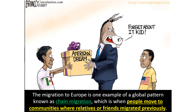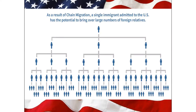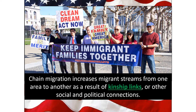The migration to Europe is one example of a global pattern known as chain migration, which is when people move to communities where relatives or friends have migrated previously. As a result of chain migration, a single immigrant admitted to the US has the potential to bring over large numbers of foreign relatives. US policy has allowed for chain migration, and it increases migrant streams due to kinship links or social and political connections, which is why we end up with ethnic enclaves within cities.